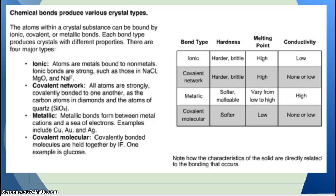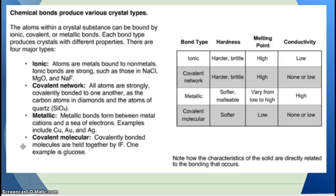Chemical bonds produce various crystal types. The atoms within a crystal substance can be bound by ionic, covalent, or metallic bonds, and each bond type produces crystals with different properties. There are four major types: ionic (a metal bonded to a nonmetal, with strong bonds such as those in table salt); covalent network (all atoms are strongly covalently bonded to one another, as in carbon atoms in diamonds and atoms of quartz); metallic bonds (forming between metal cations and a sea of electrons, as in copper, gold, or silver); and covalent molecular (covalently bonded molecules held together by intermolecular forces, such as glucose). Depending on how they are held together, they have melting points ranging from high to low.